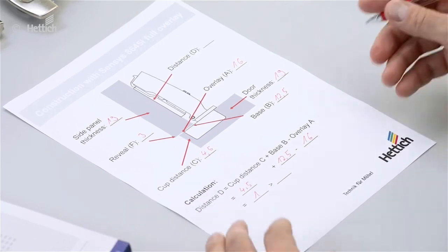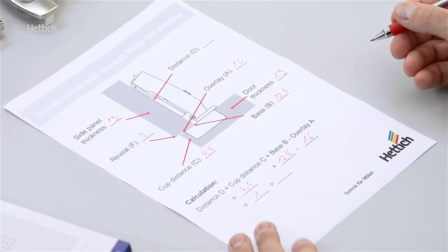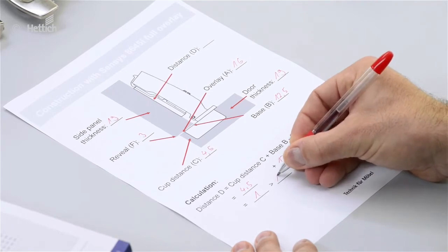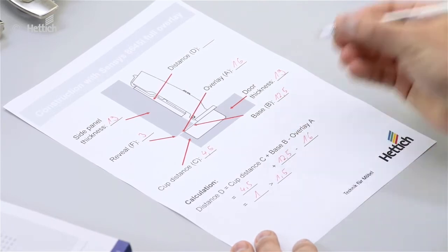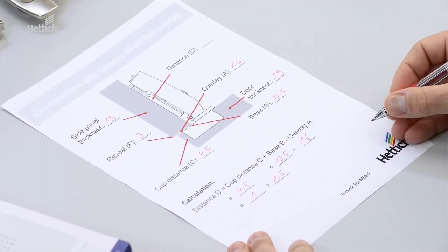But that doesn't exist, so we go to the next bigger size. That's 1.5 millimeters. The resulting difference of 0.5 millimeters has to be adjusted with the overlay adjustment screw integrated in the hinge.